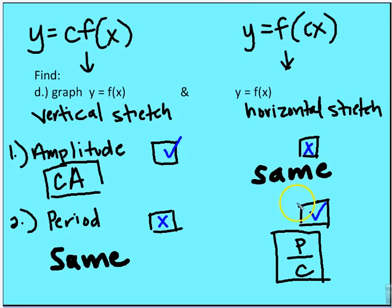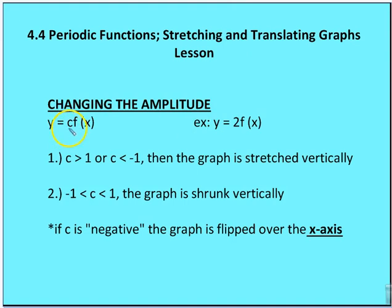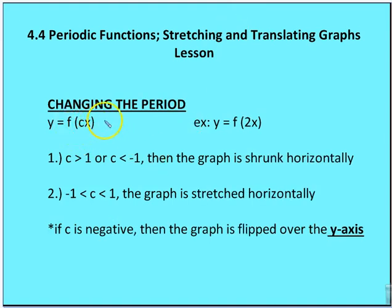When c is outside and its absolute value is greater than 1, the graph stretches vertically and amplitude increases. When the absolute value is between 0 and 1, the graph shrinks vertically and amplitude decreases. If c is negative, the graph is flipped over the x-axis. When c is inside the function and its absolute value is greater than 1, the graph is compressed horizontally. When c is a fraction, the graph stretches horizontally. If c is negative inside, the graph is flipped over the y-axis.